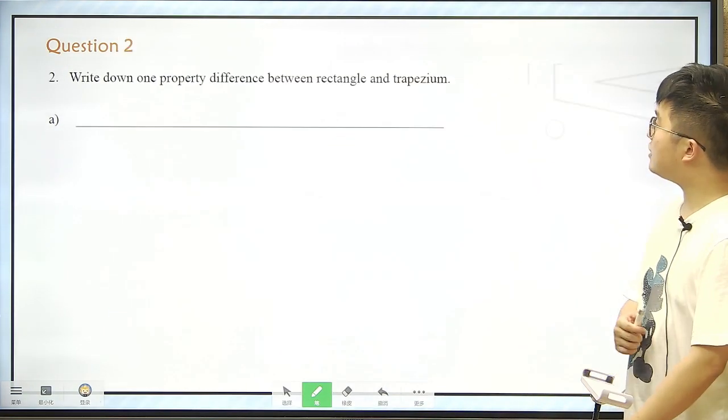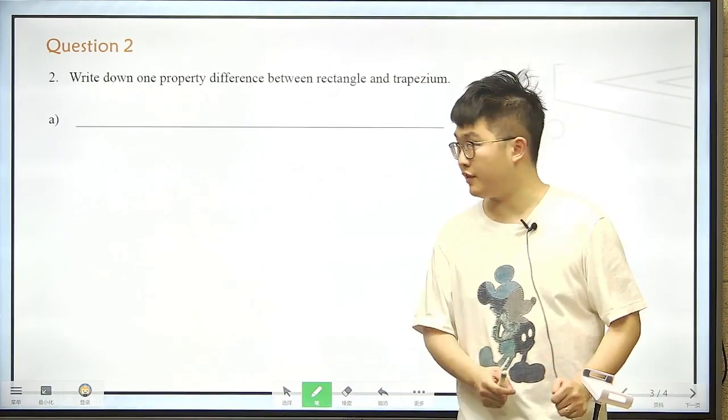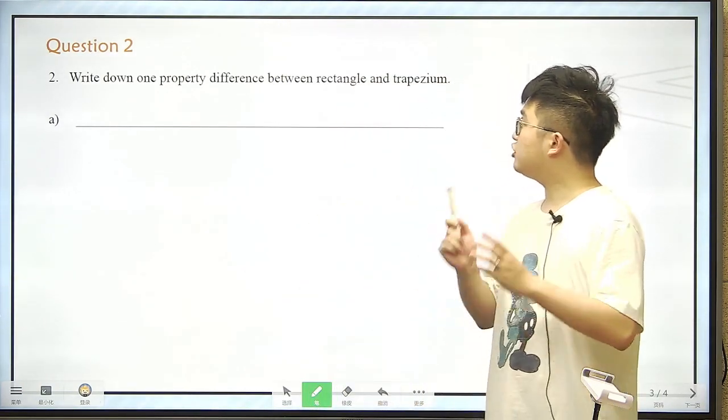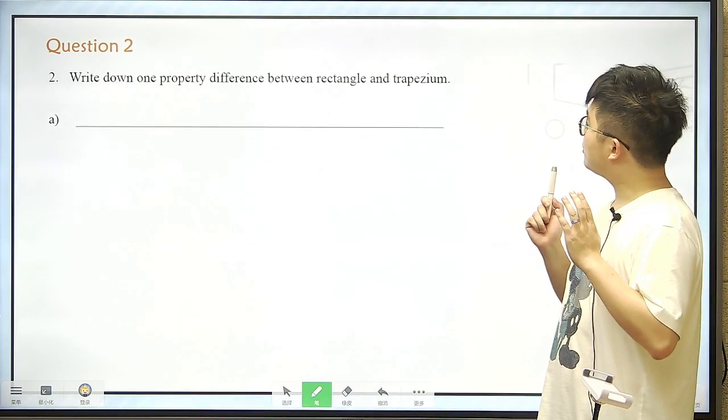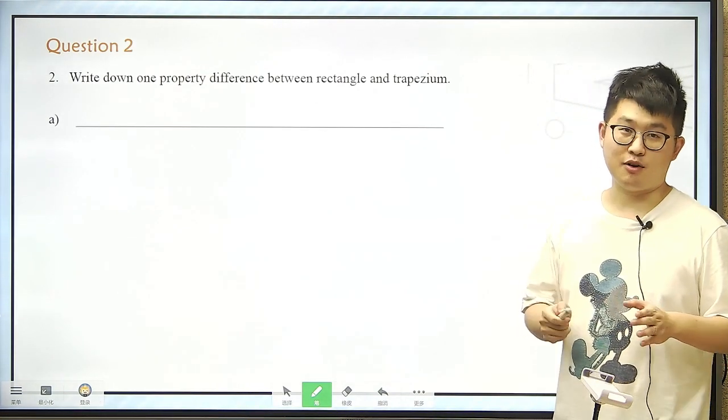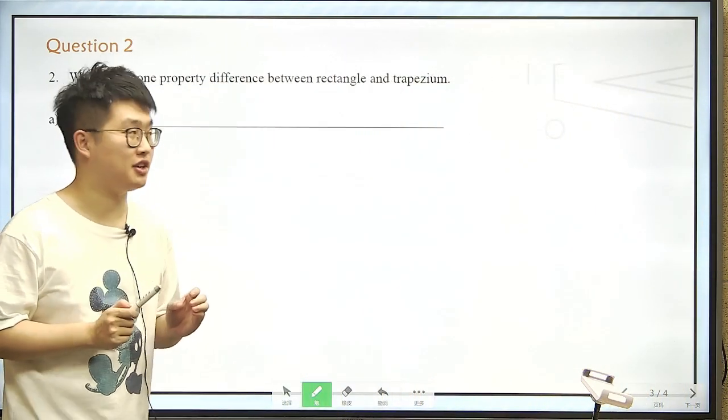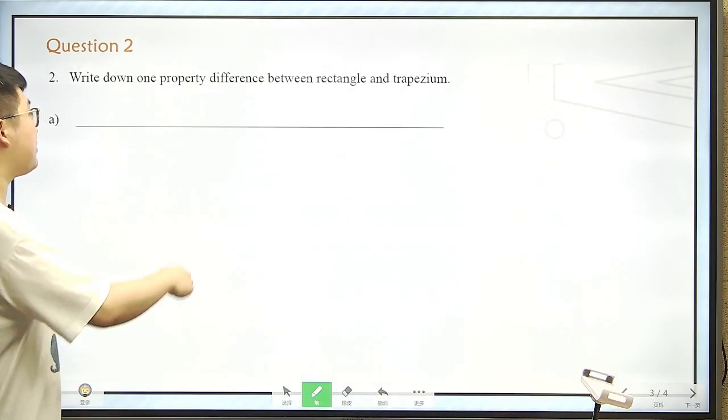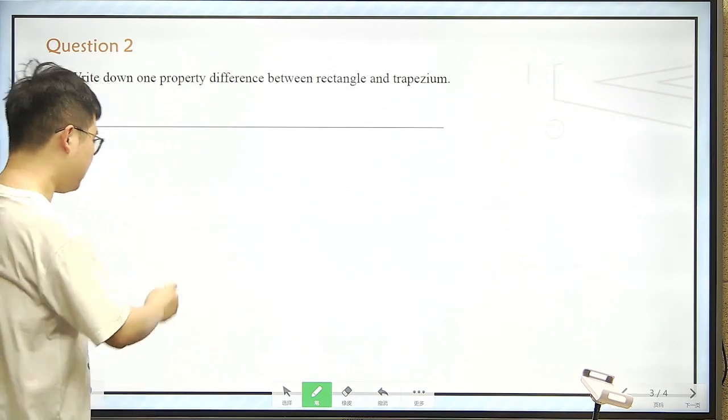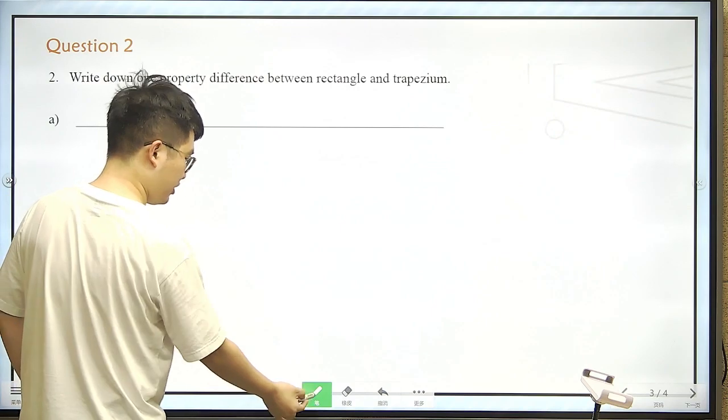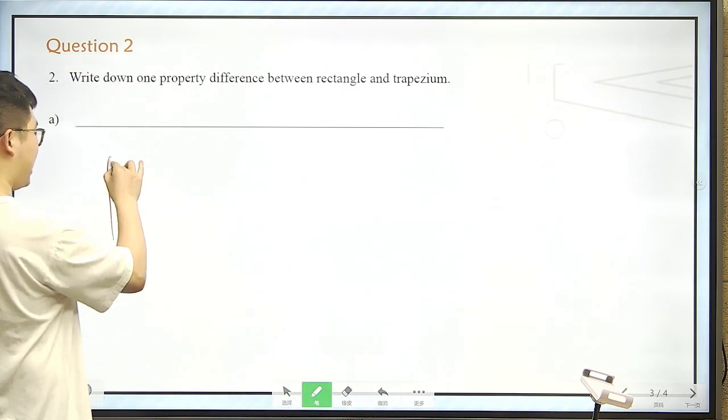And now the second question is a little bit more difficult. It's about the property difference between rectangle and trapezium. Trapezium. Now this word is really difficult to pronounce. Trapezium. So rectangle, of course, we are quite familiar, right? Rectangle is like, a rectangle is like this.